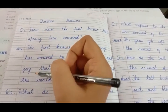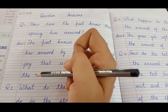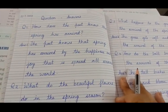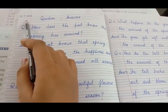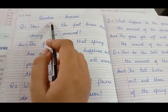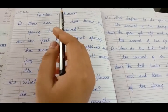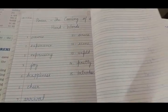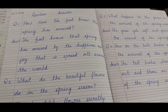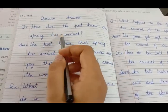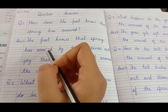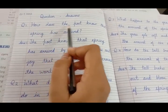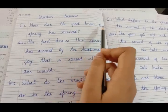I'll explain each and every question with answer so that you can understand and copy it down. First of all, write the date and then question answers. No need to write the poem name because earlier we have already written the name of the poem. Let's begin. Question one: how does the poet know that the spring has arrived?